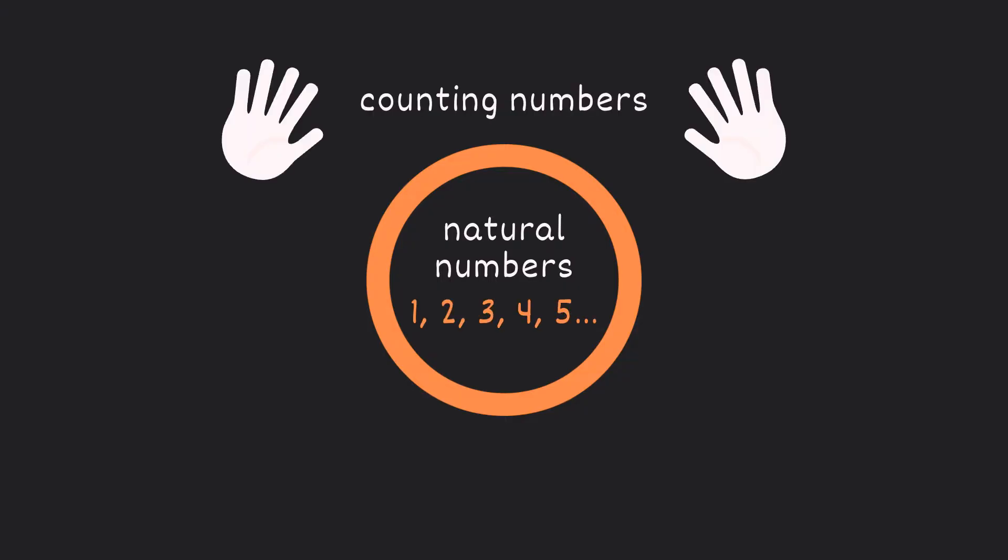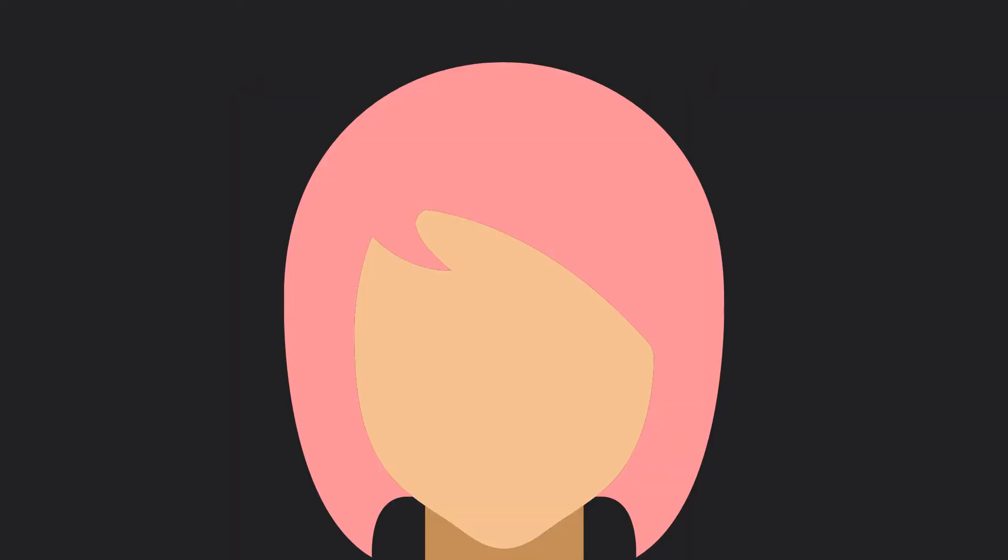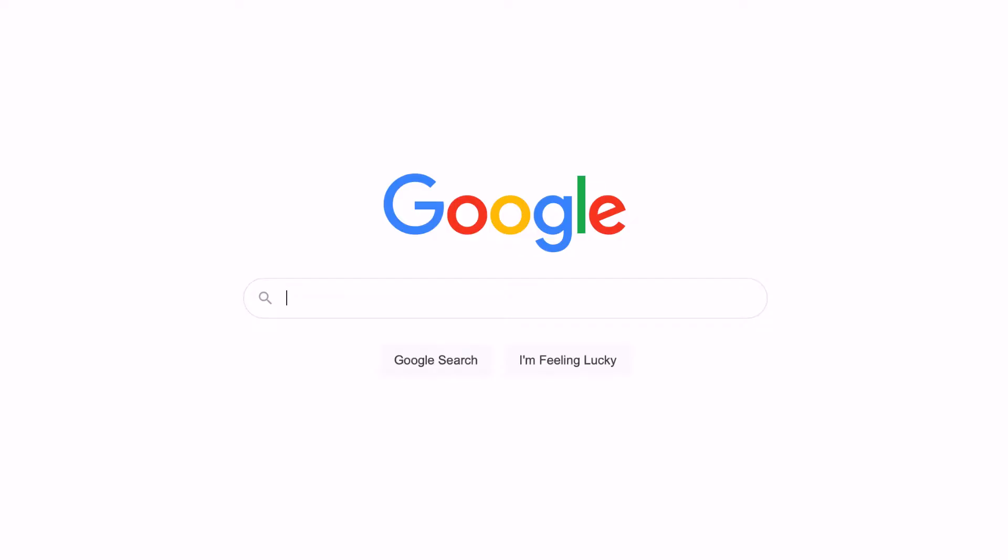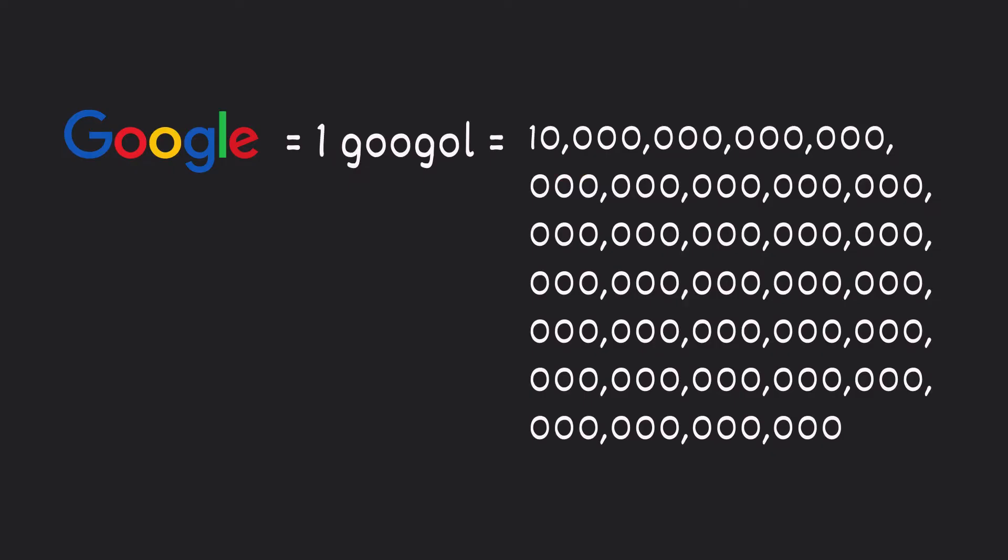And these are also known as counting numbers because we can literally use them to count things like I have one head, you have two eyeballs and I have 10 fingers. Even Google is based on a counting number. The name Google comes from one googol and that is one with a hundred zeros behind it.